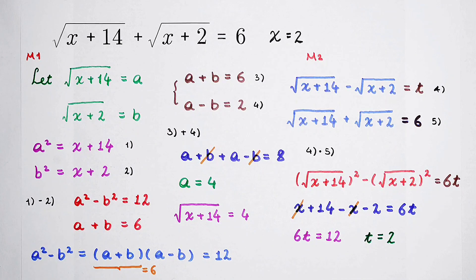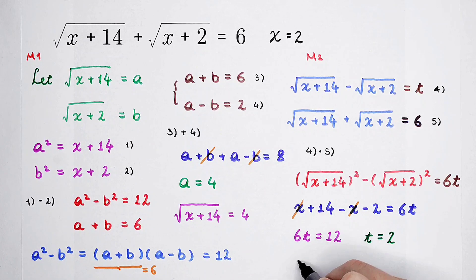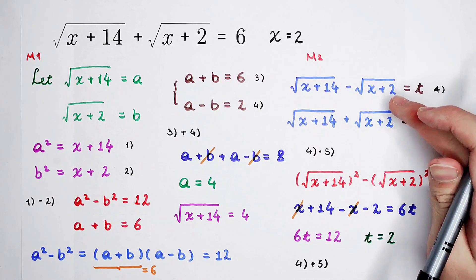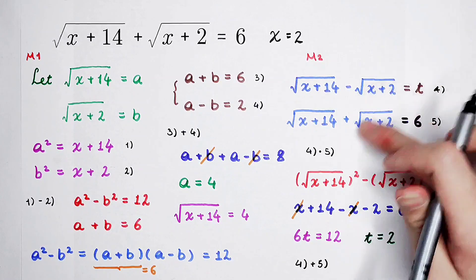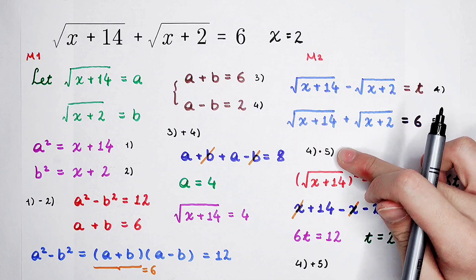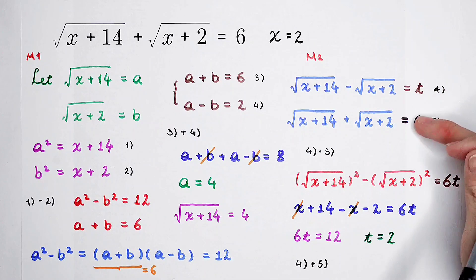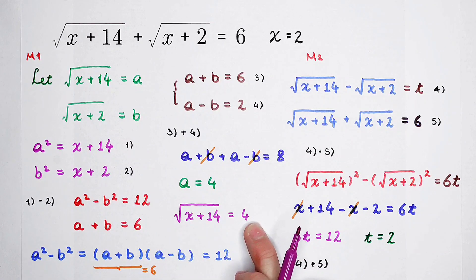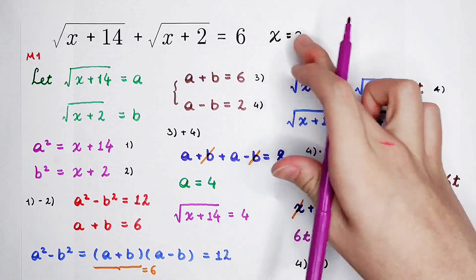But we have to solve the value of x. Then, what should we do? We can add these two terms, these two equations, together. The fourth equation plus the fifth equation, negative square root of x plus 2, positive this, they can be cancelled. So, 2 times of square root of x plus 14 is t plus 6. And t plus 6 is 2 plus 6 is 8. And we can also divide the boson size by 2 and we can get this equation and solve it. x is equal to 2. Did you get it?